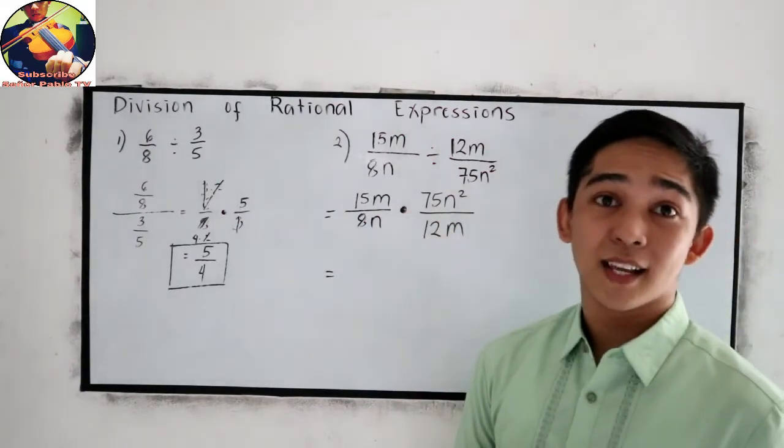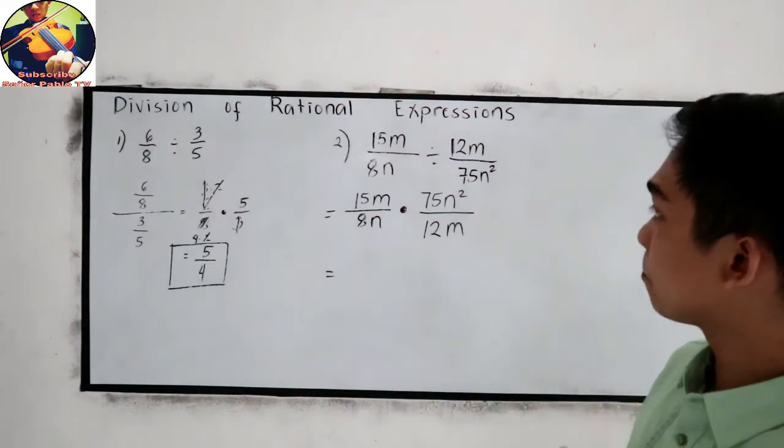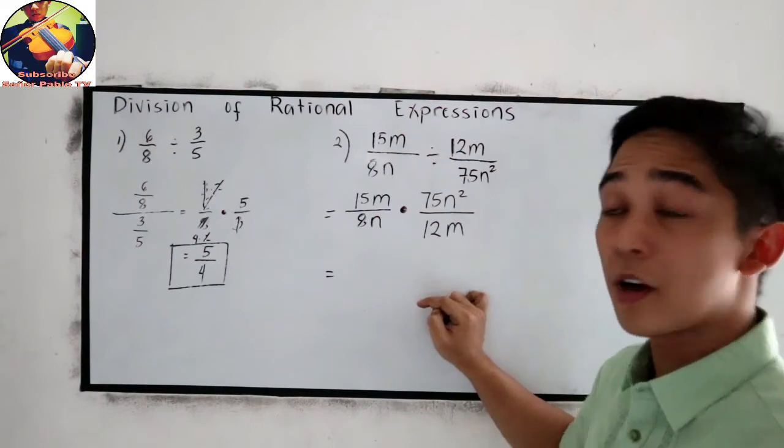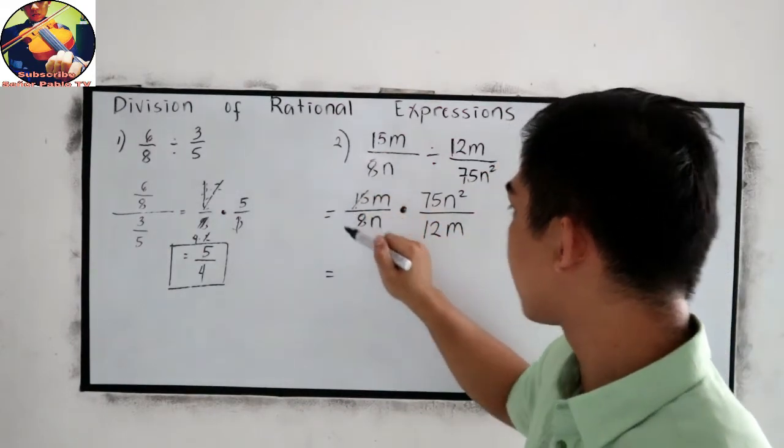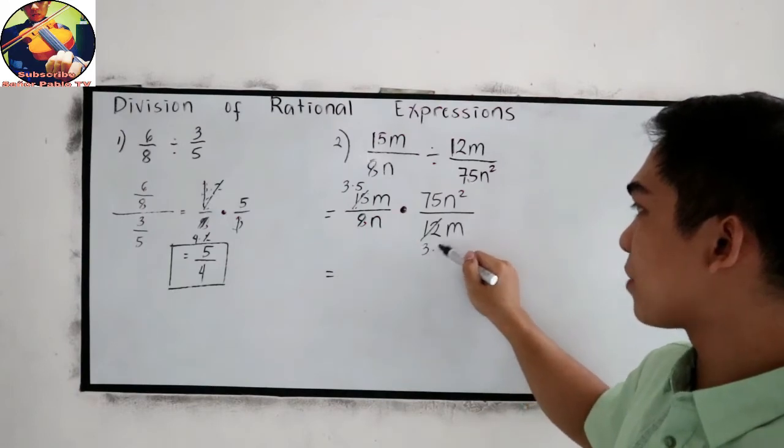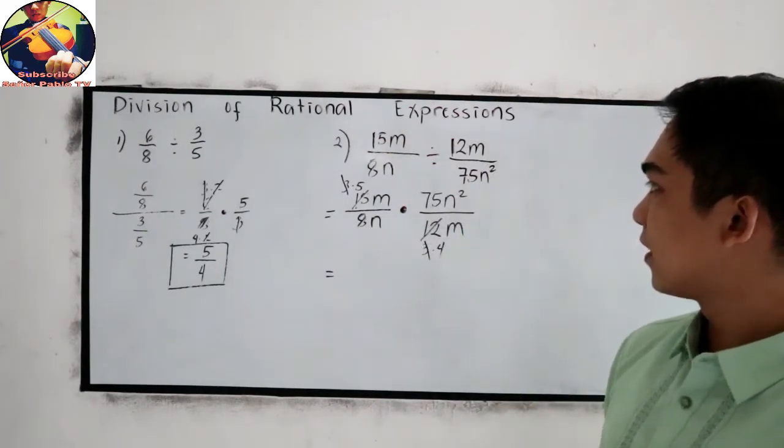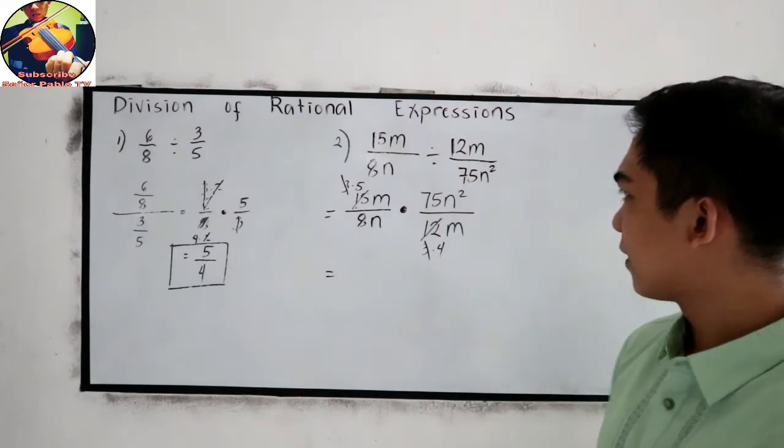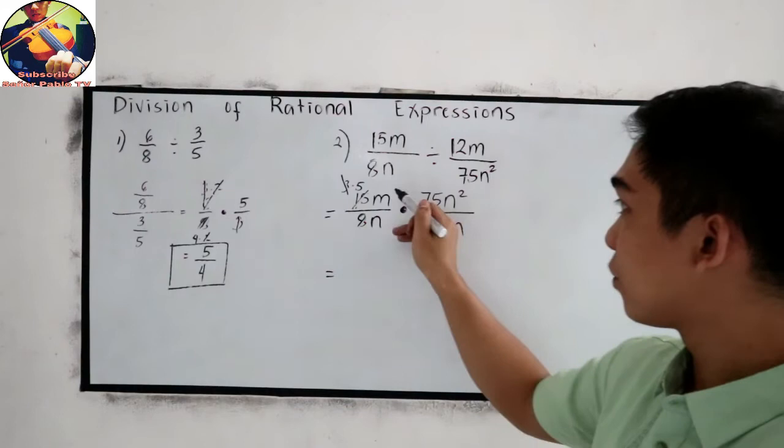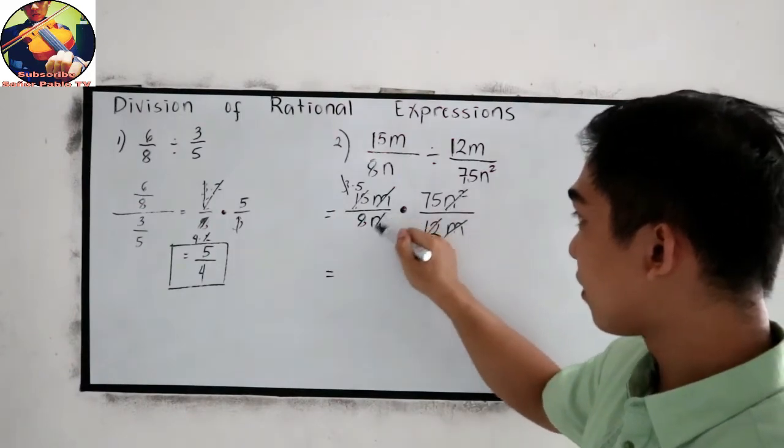Now, let us use our cancellation technique, our method of cancellation. 15 and 12 have common factors. So 15 can be written as 3 times 5, and 12 can be written as 3 times 4. So 3 and 3 will be canceled out. Next, variable m will be canceled out. Then n, n squared divided by n, this will become n.